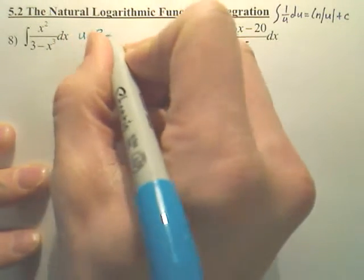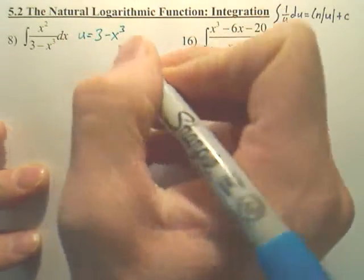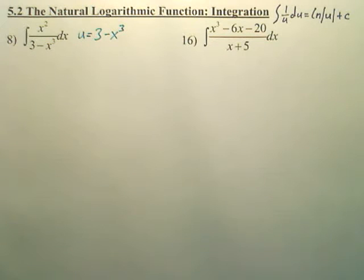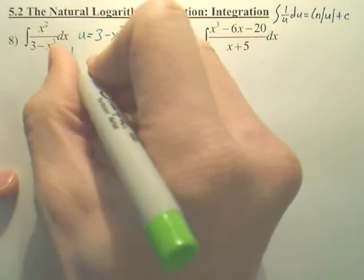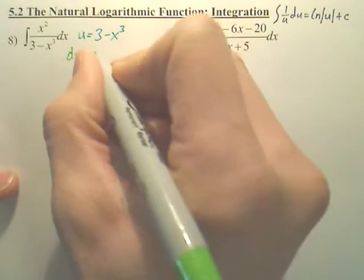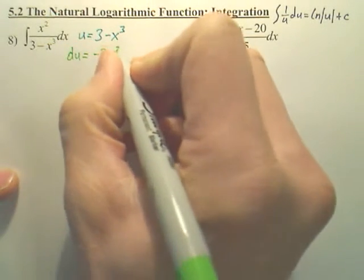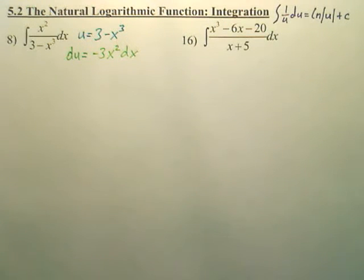u is going to be 3 minus x cubed. So when we derive that, we're going to get du is equal to negative 3x squared dx, and from that,